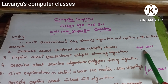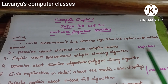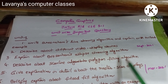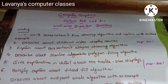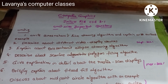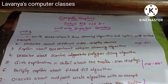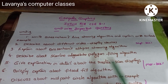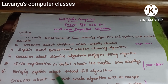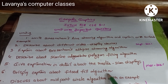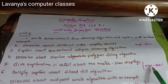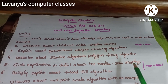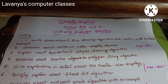These questions came in the September 2021 question paper. Also important: describe about scan line polygon filling algorithm. Fifth question: give explanation in detail about raster scan displays. Sixth: briefly explain about flood fill algorithm. These two questions came in March 2021. All of these are from JNTU old question papers.